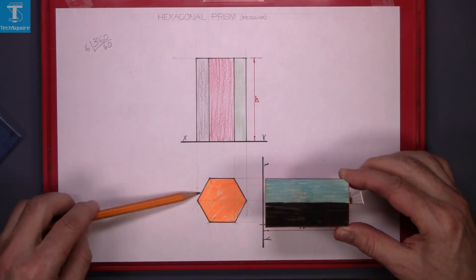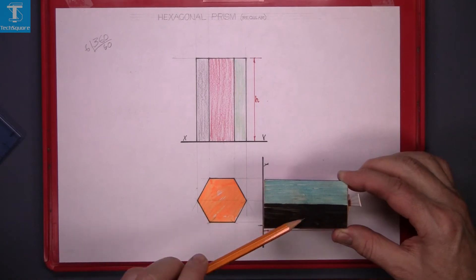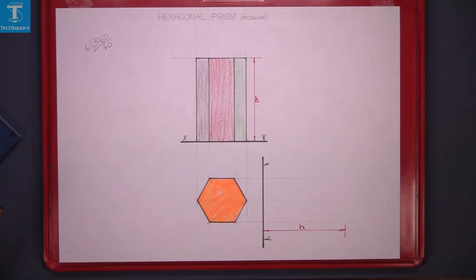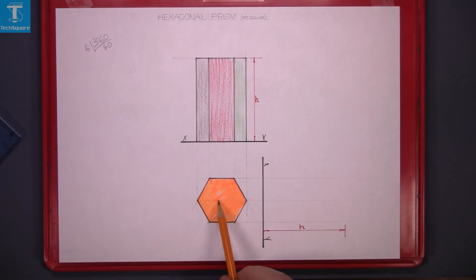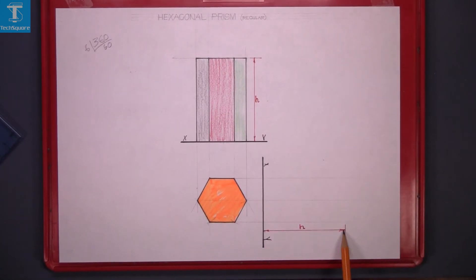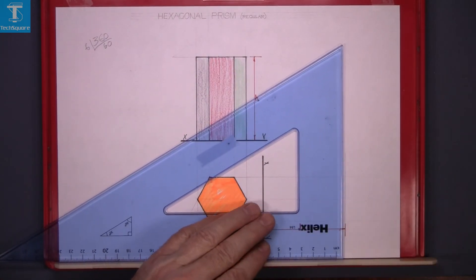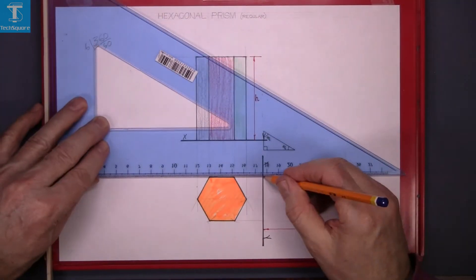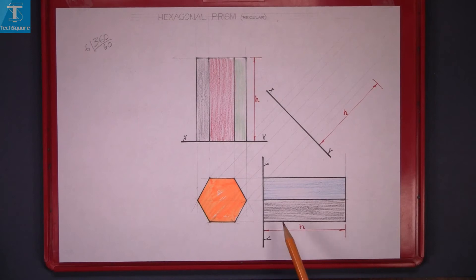It's this surface and this one here. To do that, we project the lines across and, using the height taken above, step it out here and here, draw that line vertically up, and proceed to line in your drawing. That's your drawing complete.